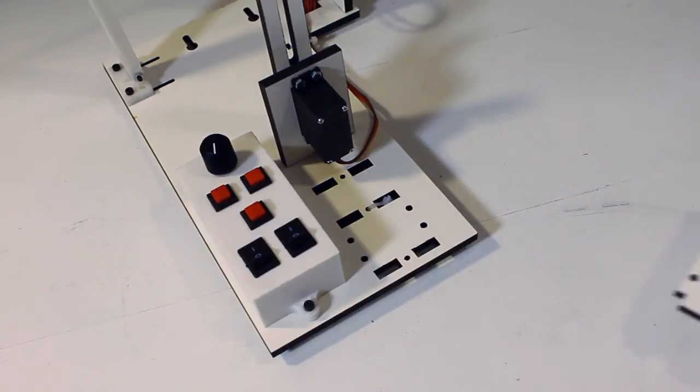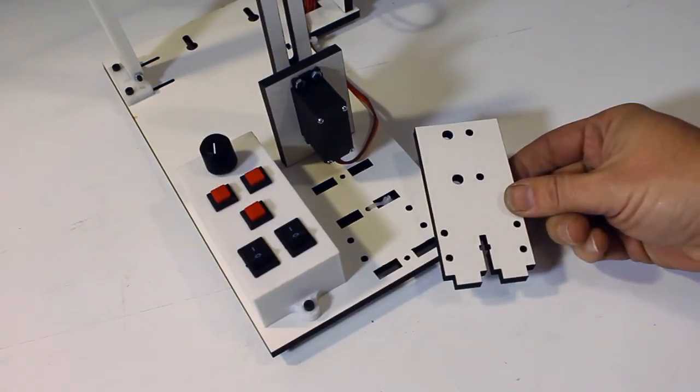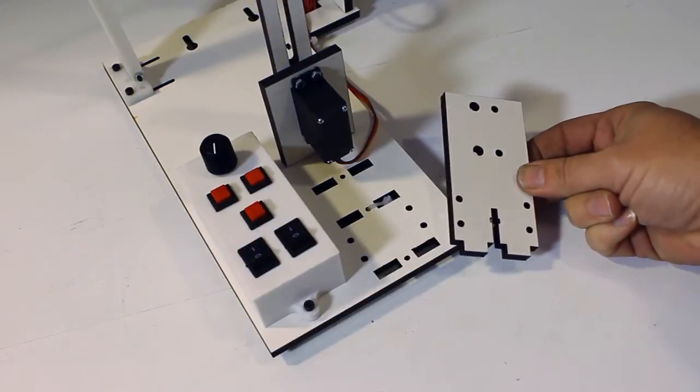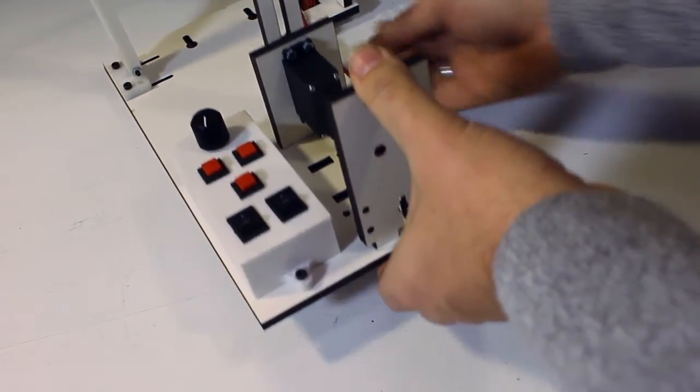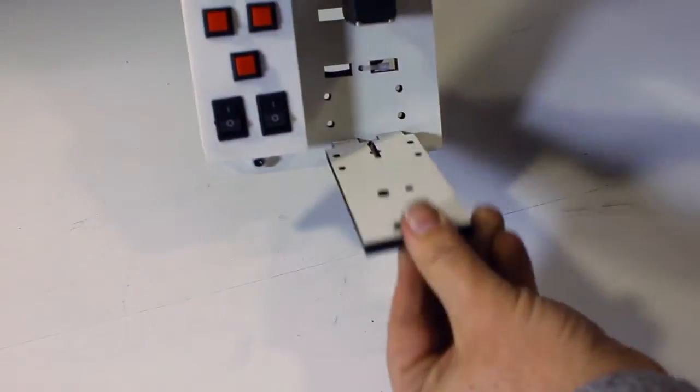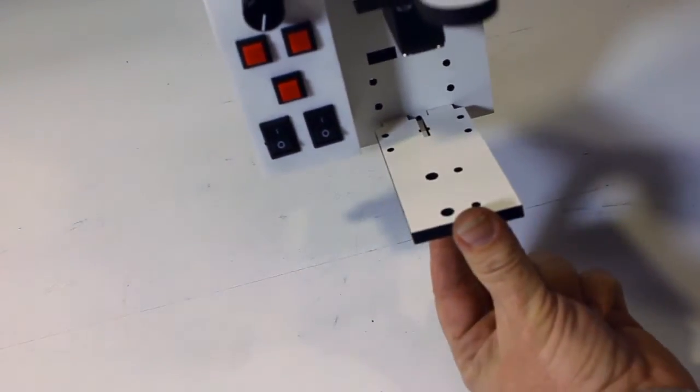The last part to go on the winder base is the filament intake plate. This can go on two ways. You can go into the slots and stand up. It's better if the winder is mounted to the wall because you want the filament always to come up from below.